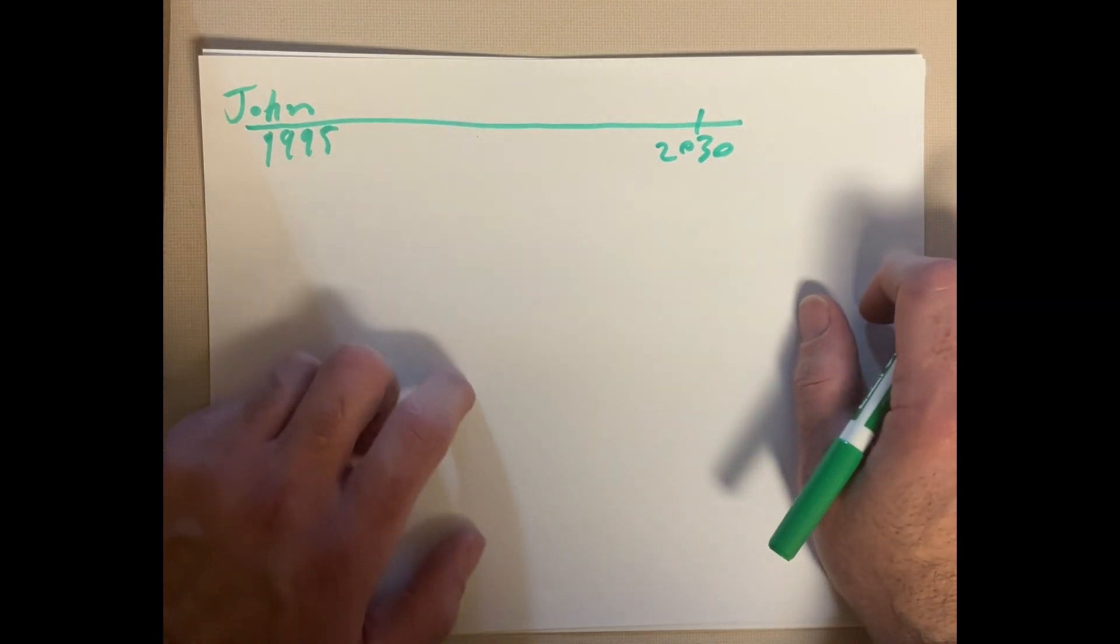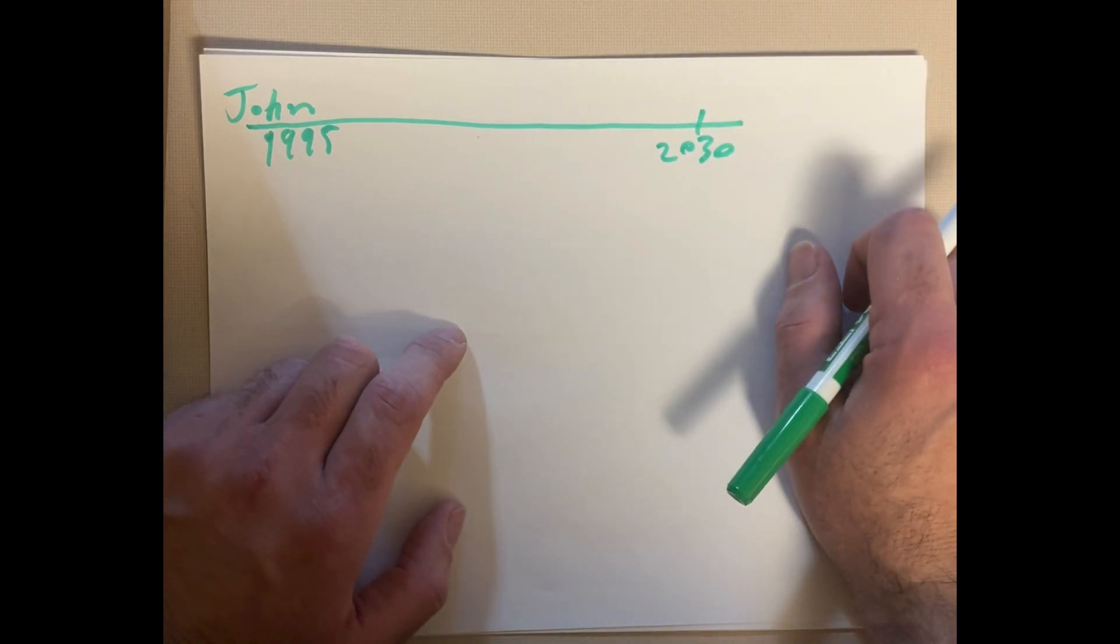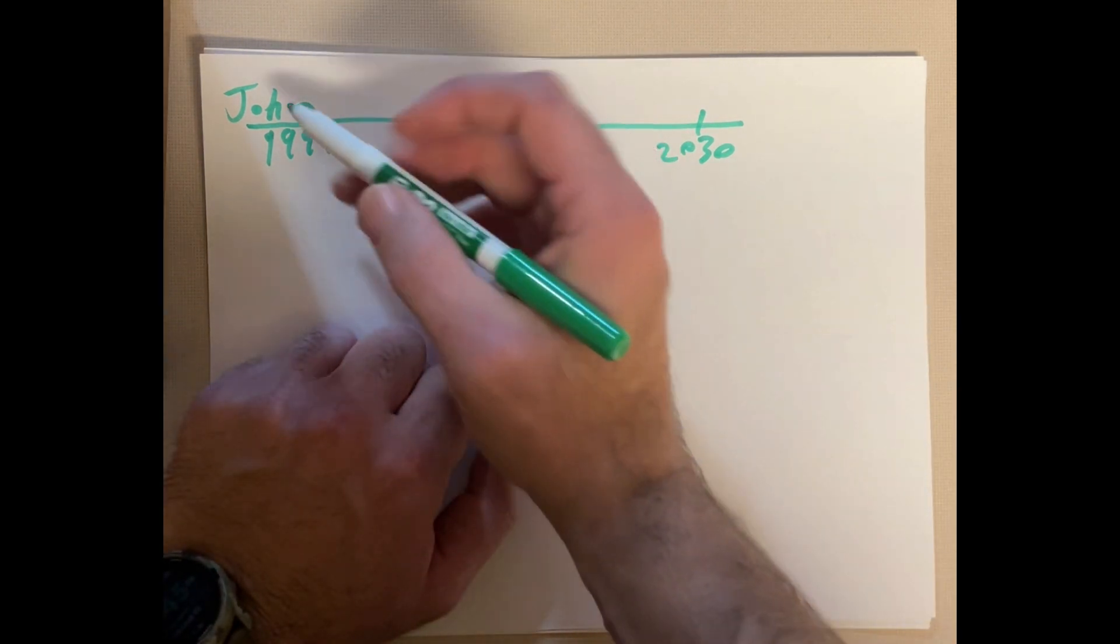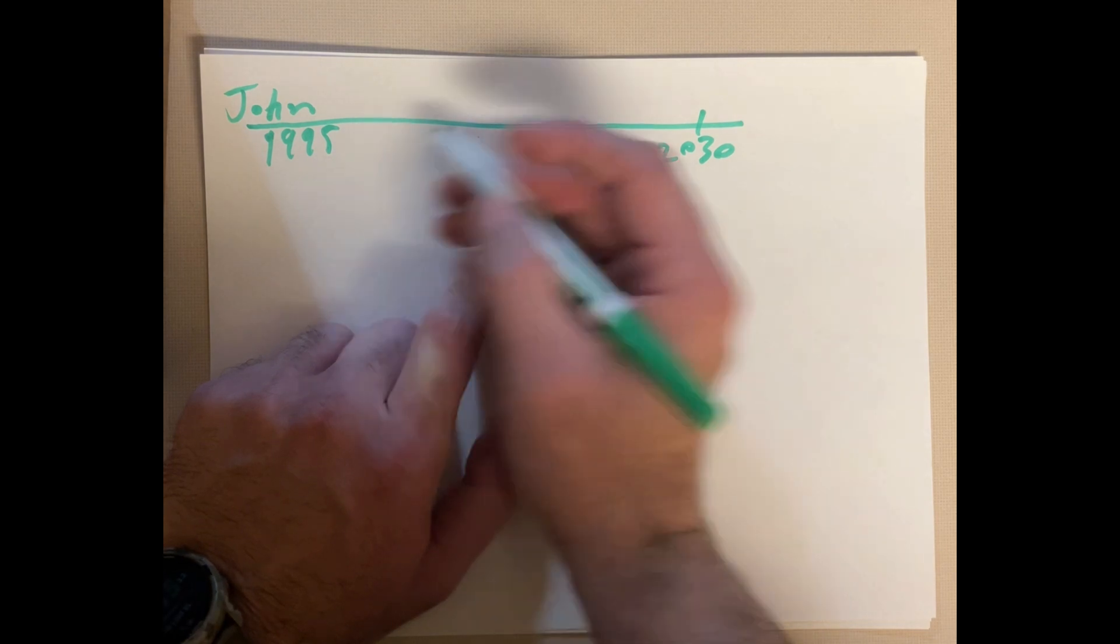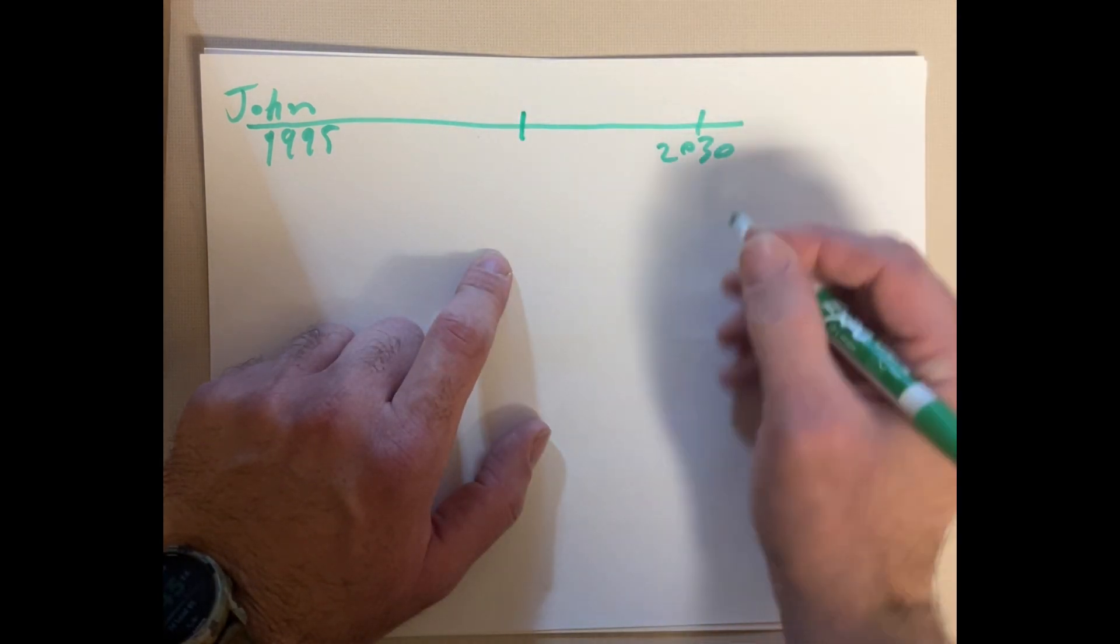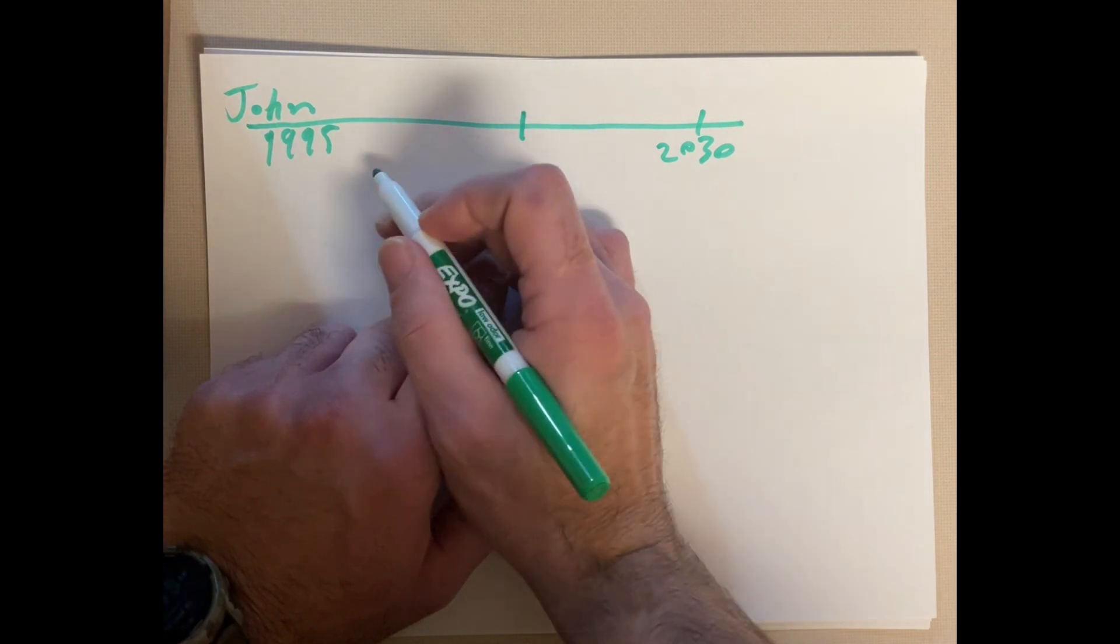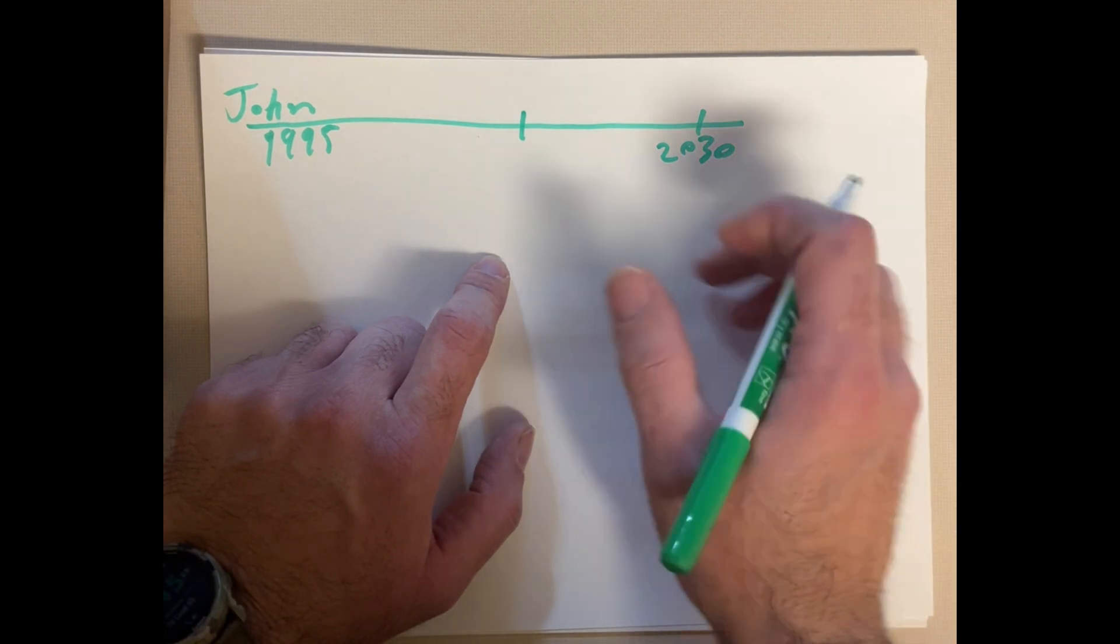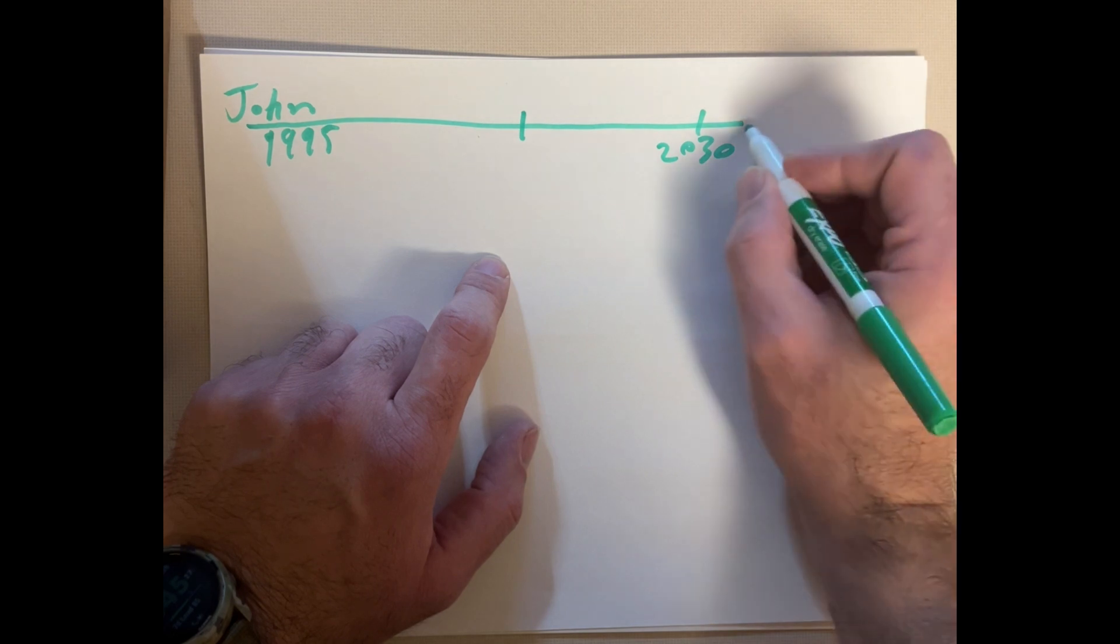In line with our current timeline with AI being invented somewhere in the 2020s. So, John's born in 95, has a bunch of siblings. John also probably has a family somewhere in here, and John's siblings also have a family. So, there's a whole dynasty of John Connors out there. Judgment Day happens sometime around 2030.